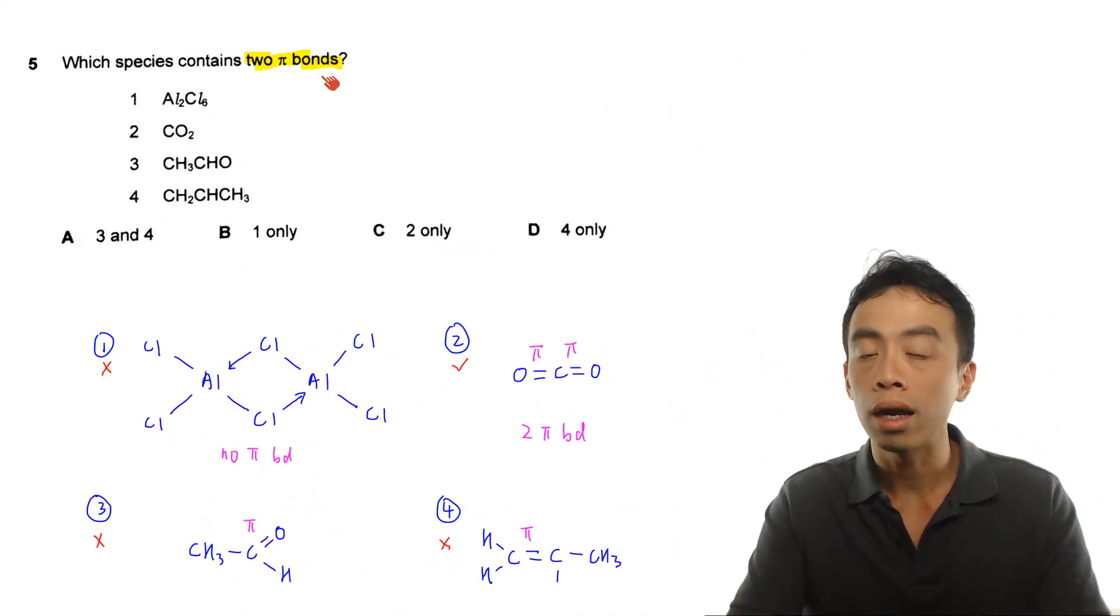Question 5 goes like this: which species contains 2 pi bonds? So we're given 4 options: option 1 is Al2Cl6, aluminum chloride dimer; option 2, carbon dioxide; option 3, CH3CHO, so this is our aldehyde functional group; option 4, CH2CHCH3, this is actually an alkene functional group, so later when we draw the Lewis structure, it will be slightly more obvious.